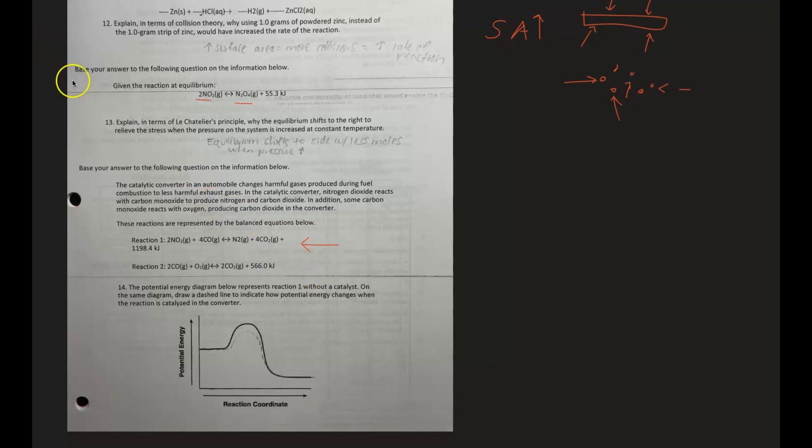information. So it represents reaction one without a catalyst. On the same diagram, draw a dashed line to indicate how potential energy changes when the reaction is catalyzed in the converter.